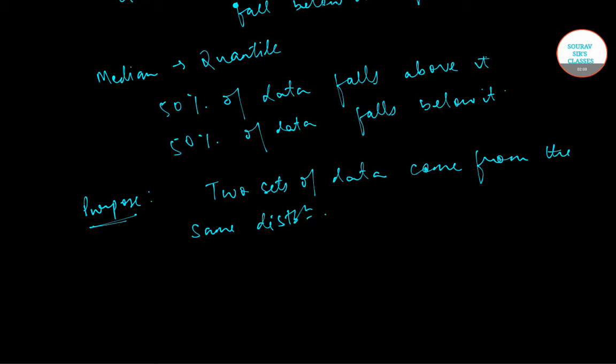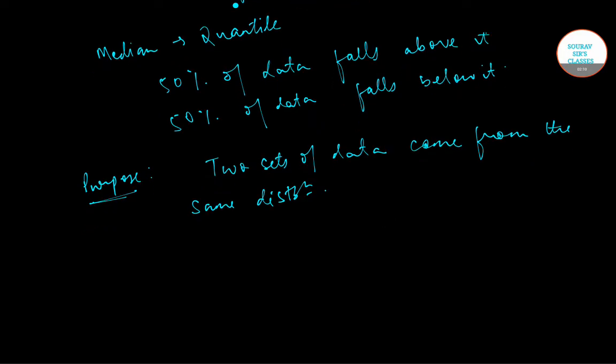A 45 degree angle is plotted on the QQ plot. If the two data sets come from a common distribution, the points will fall on that reference line.